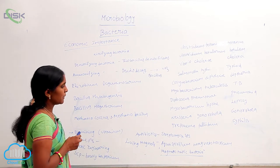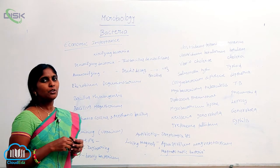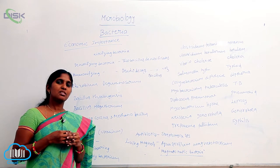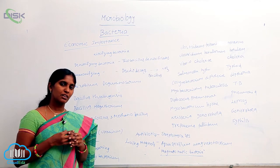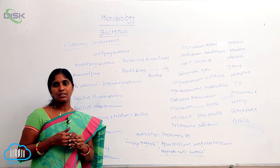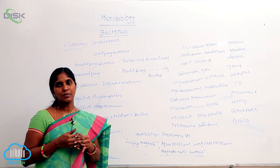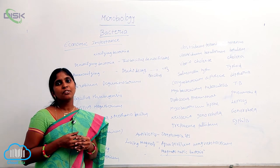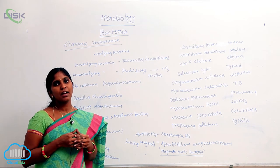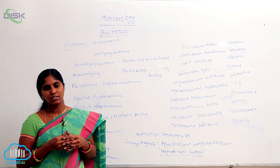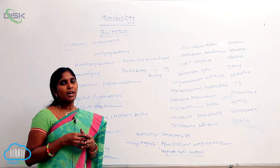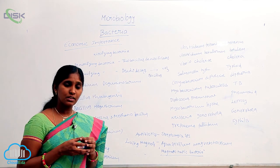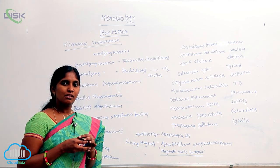These are the useful purposes of bacteria. Coming to plants, plant bacterial diseases are also caused by a few bacteria. For example, citrus canker is caused by Xanthomonas citri. Crown gall disease of apple is caused by Agrobacterium tumefaciens. Next, blight disease of paddy is caused by Pseudomonas.